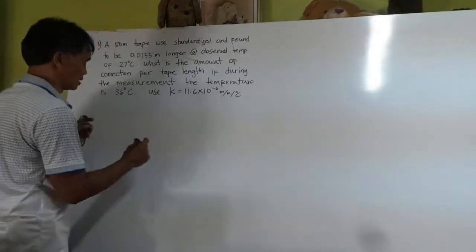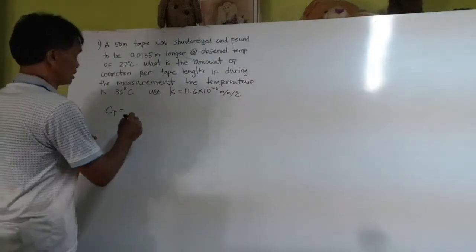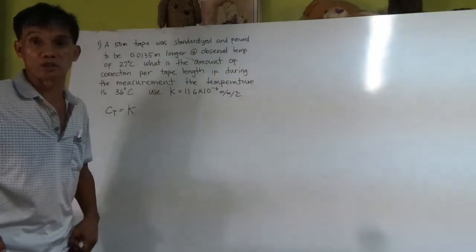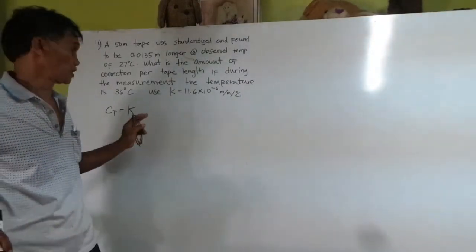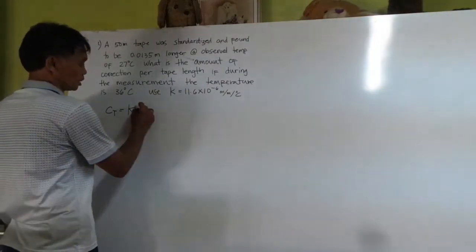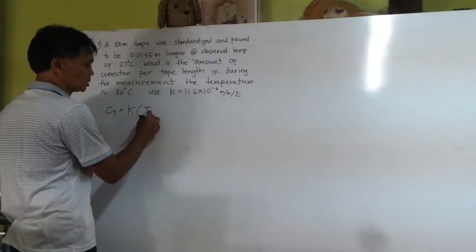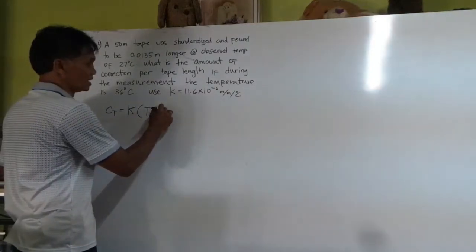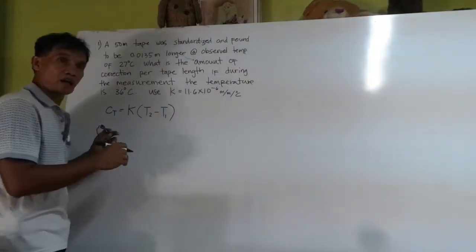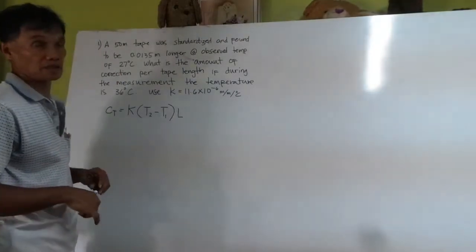The correction of the steel tape per meter is CT equals the coefficient of expansion, multiplied by the actual temperature minus the initial or the standard temperature T1, times the full tape length. It is the length of the tape, one full tape length, two full tape length.